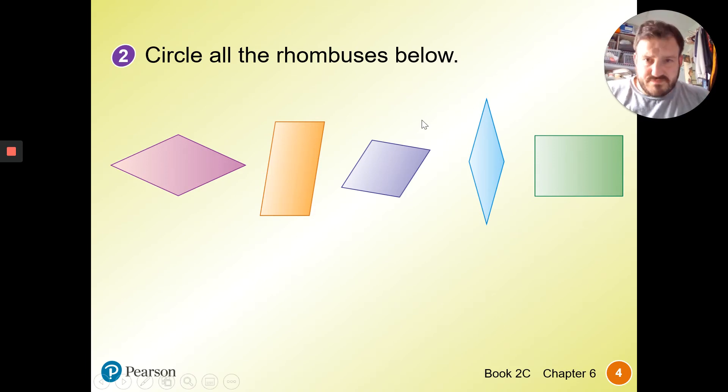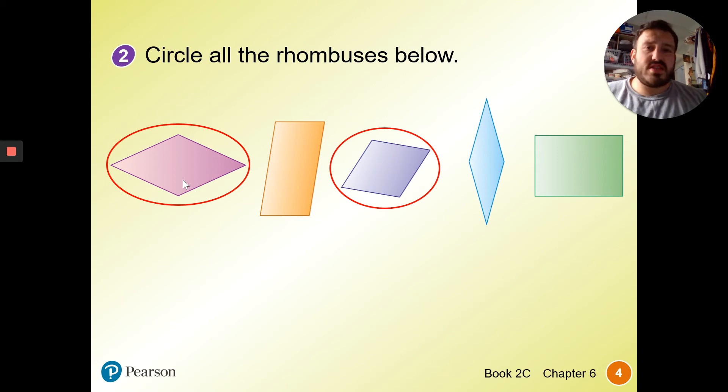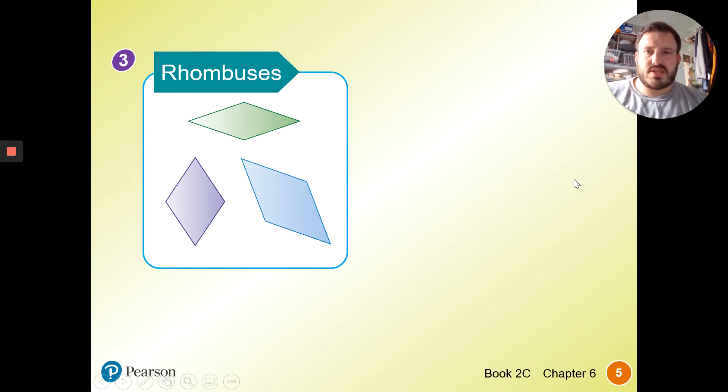Circle the rhombuses below. We know this isn't four equal sides, and that's a rectangle. That's not four equal sides. So we can have a good guess that's going to be one, that's the second one, and there's a third one. We know that these two are definitely not rhombuses. So rhombuses can look in any kind of way. You've just got to imagine the line. Are they the same size all the way around?